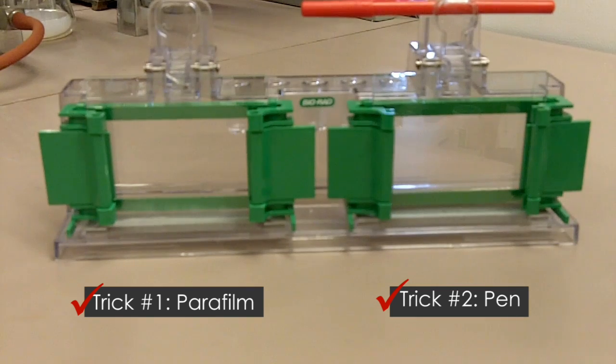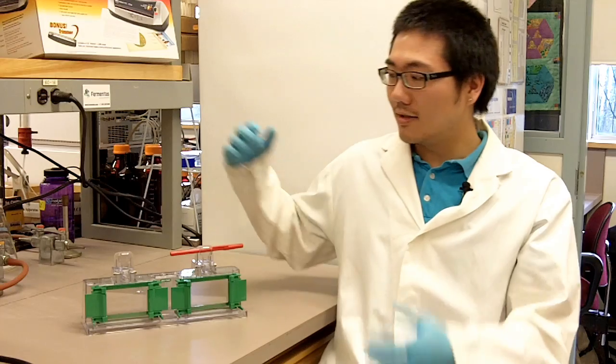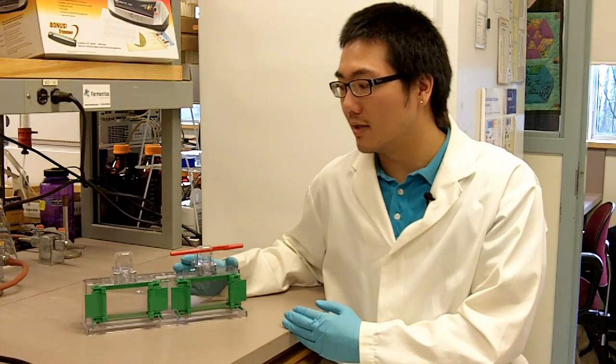You can use these two tricks separately or you can combine them. And it's all up to you. So here are the two tricks on how to prevent the gel from leaking. The first one using the parafilm. The second one using a pen.